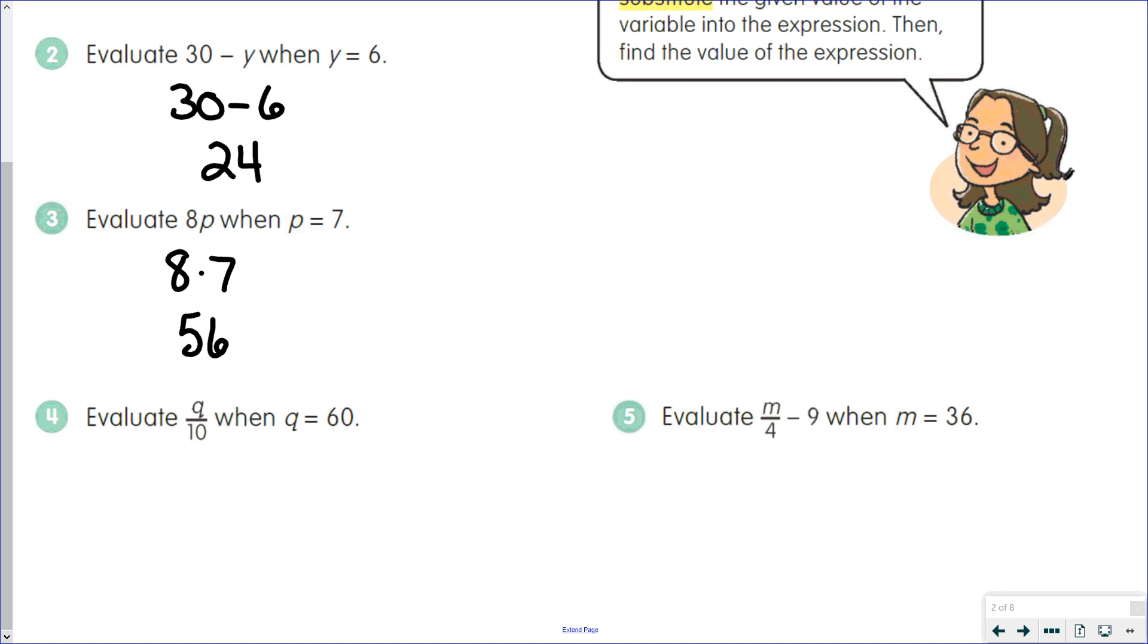Evaluate Q over 10 when Q equals 60. We're going to take out the Q and put in 60. 60 over 10 is 6.